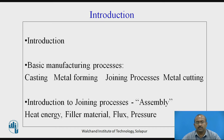Let us go with the introduction of joining process. There are basic manufacturing processes widely divided into four major segments: casting, where melting of base metal raw material is carried out and converted into the required specification; metal forming, where the material is converted from raw material to finished product through plastic deformation; joining processes, where more than two elements are joined together as a permanent joint with application of heat energy, filler material, flux material, and/or pressure; and metal cutting, where raw material is converted into finished product by the chip removal method.